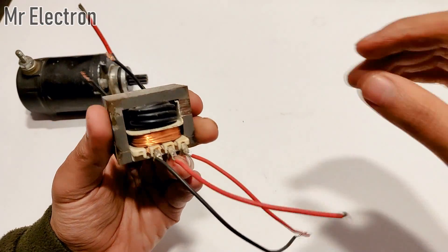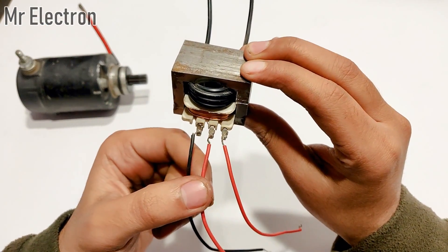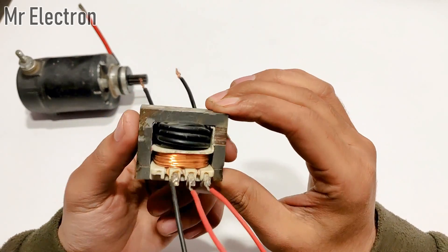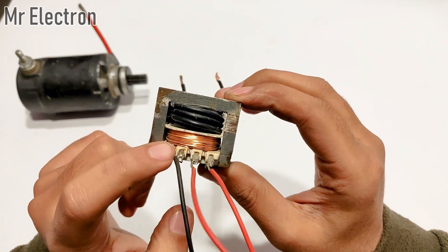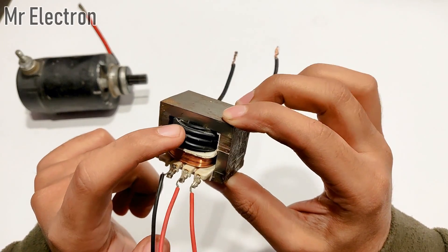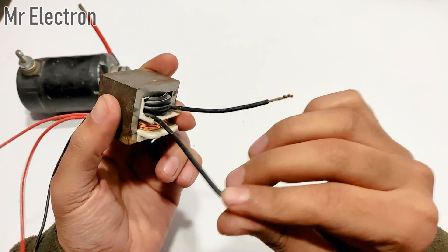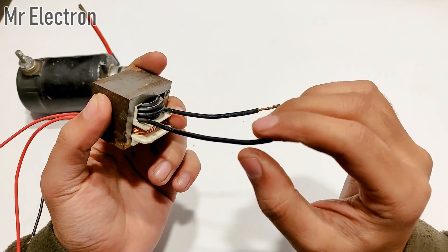This is a 40 amps center tap transformer. This black wire is the tapping point while these two red wires are the side wires. So this set is going to be the primary and this is going to be the secondary. This black wire is thicker and is going to carry the high current and produce low voltage output for running high current DC motors such as these.